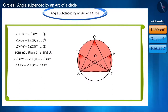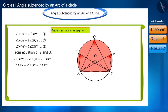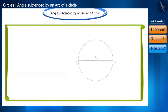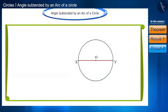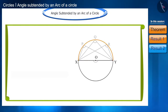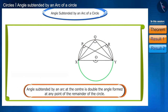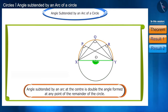If arc XY is a semicircle — that is, chord XY is the diameter of the circle — then the angle in the remaining segment is formed as such. The angle subtended from arc XY to the center, angle XOY, is twice the angle subtended at any point in the remaining part of the circle.